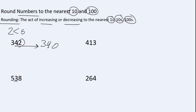The digit in the ones place, we compare with five. Eight in this case is more than five. When it is more than five, we round up. When we round up, we increase the underlined digit by one. So five, which is in the hundreds place, remains the same. Three, which is in the tens place, is increased by one and becomes four. In the ones place, we write a zero.